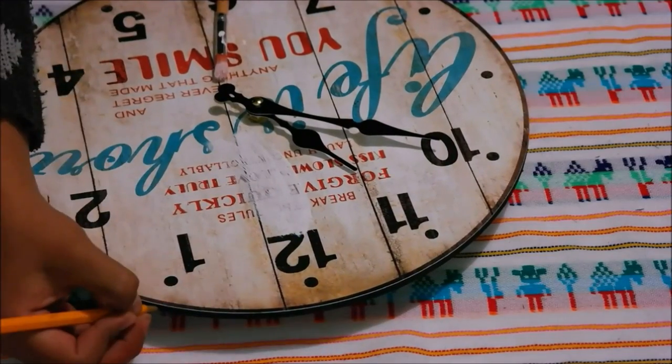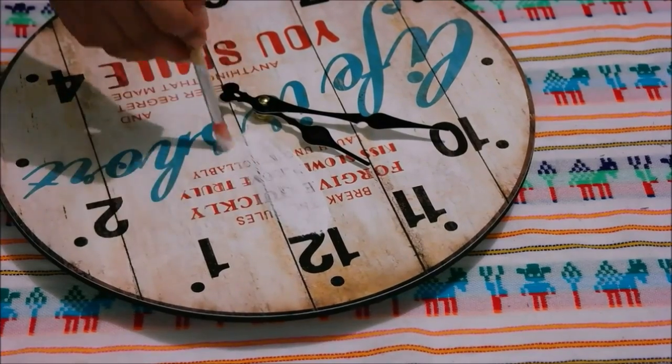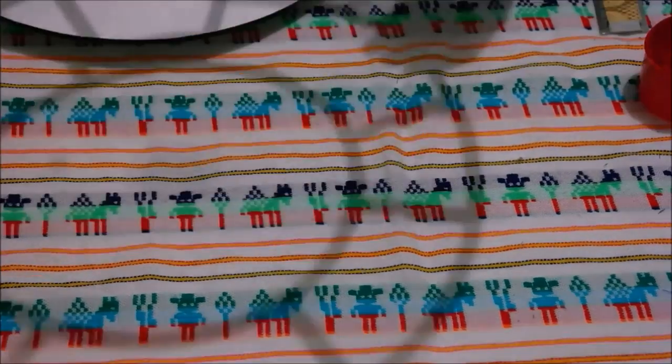Take your clock and mark the hours on the edge like I'm doing here. Then paint the entire clock white and once that it's dry, place the golden frame on top.